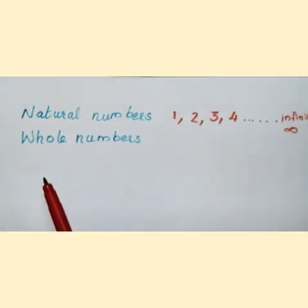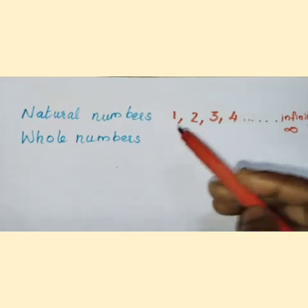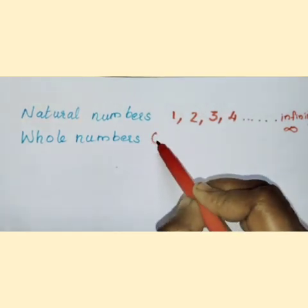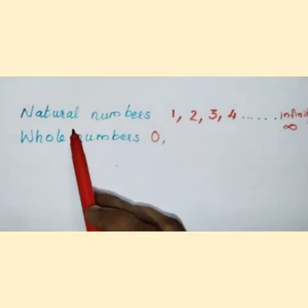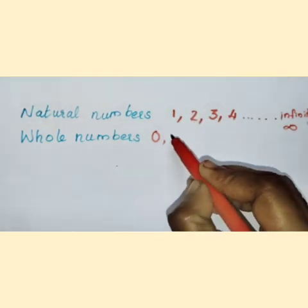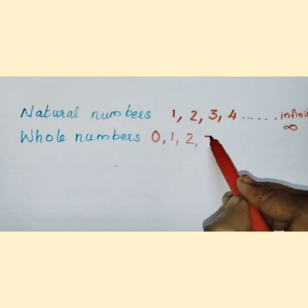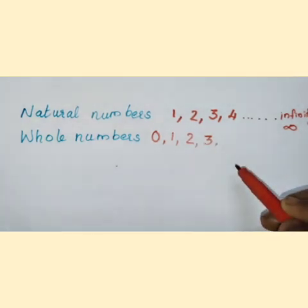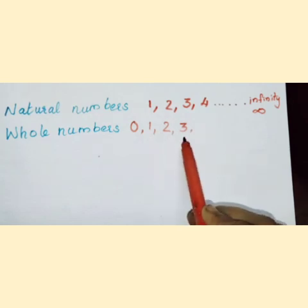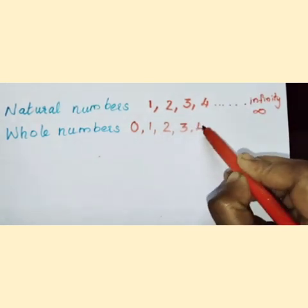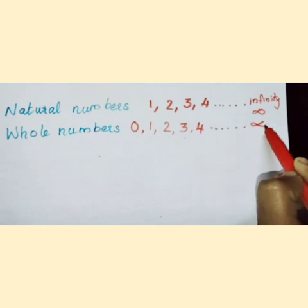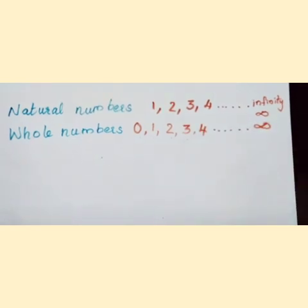And then the next is the whole numbers. Whole numbers and the only difference is, the whole numbers have a zero. Along with natural numbers, zero is added to the whole number.